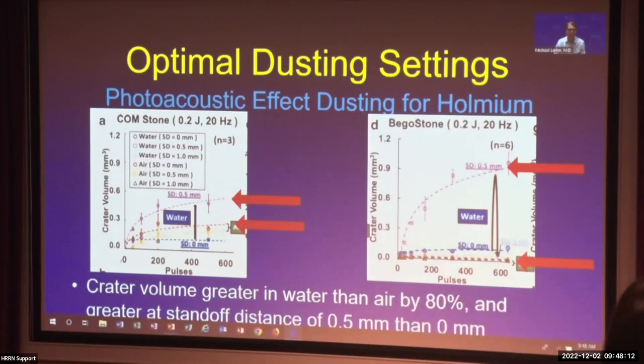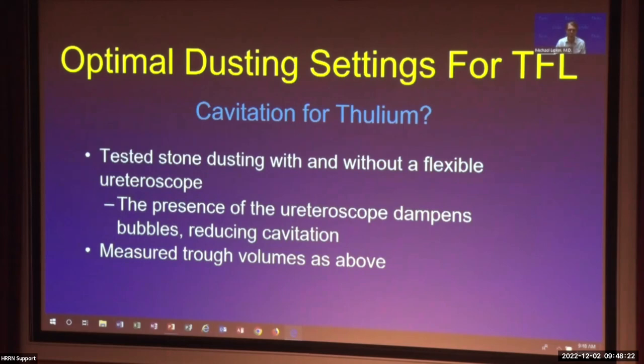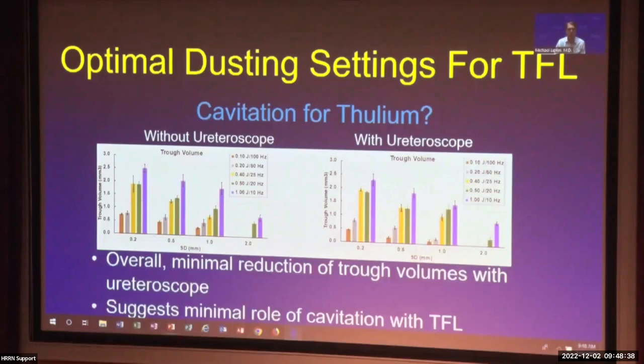For the thulium laser, we tested dusting with and without a flexible ureteroscope close to the laser tip — the presence of the ureteroscope can dampen bubbles and reduce cavitation. We found that irrespective of the ureteroscope, trough volumes were very similar with very minimal difference, suggesting that with the thulium laser there is minimal role of cavitation and it's primarily a photothermal effect. The mechanism is different, which is why the settings need to be so different.